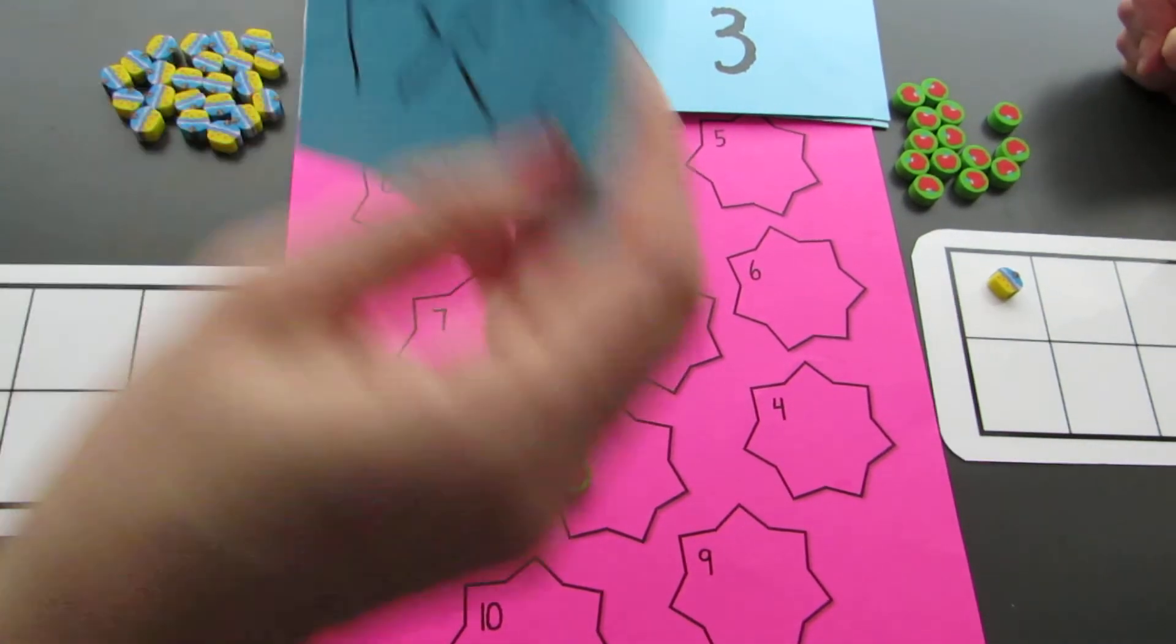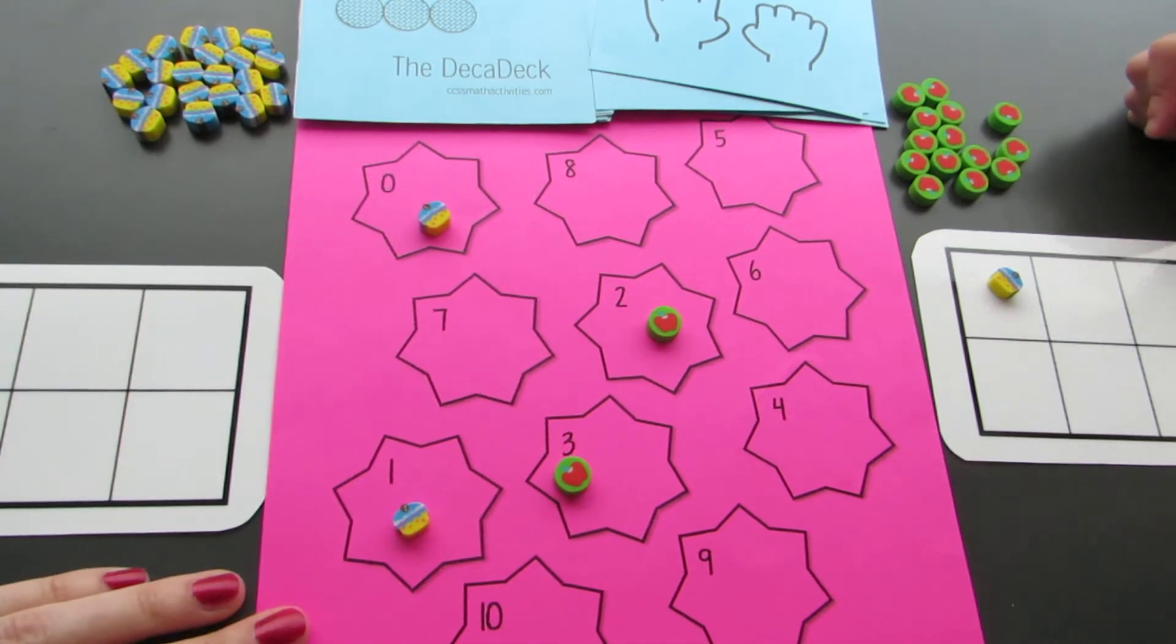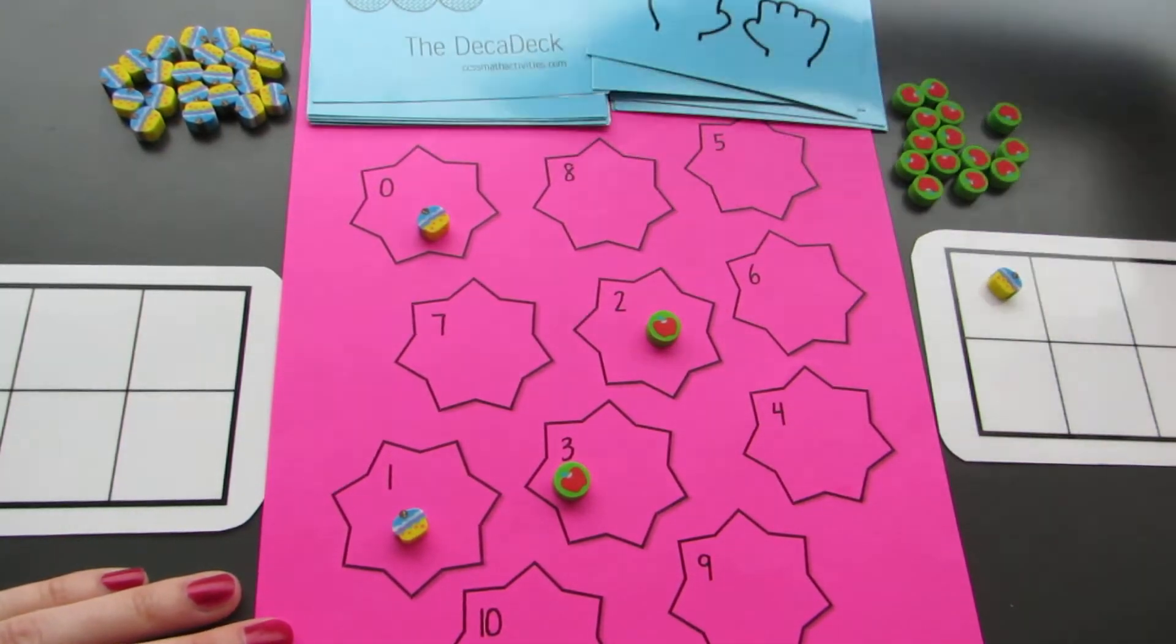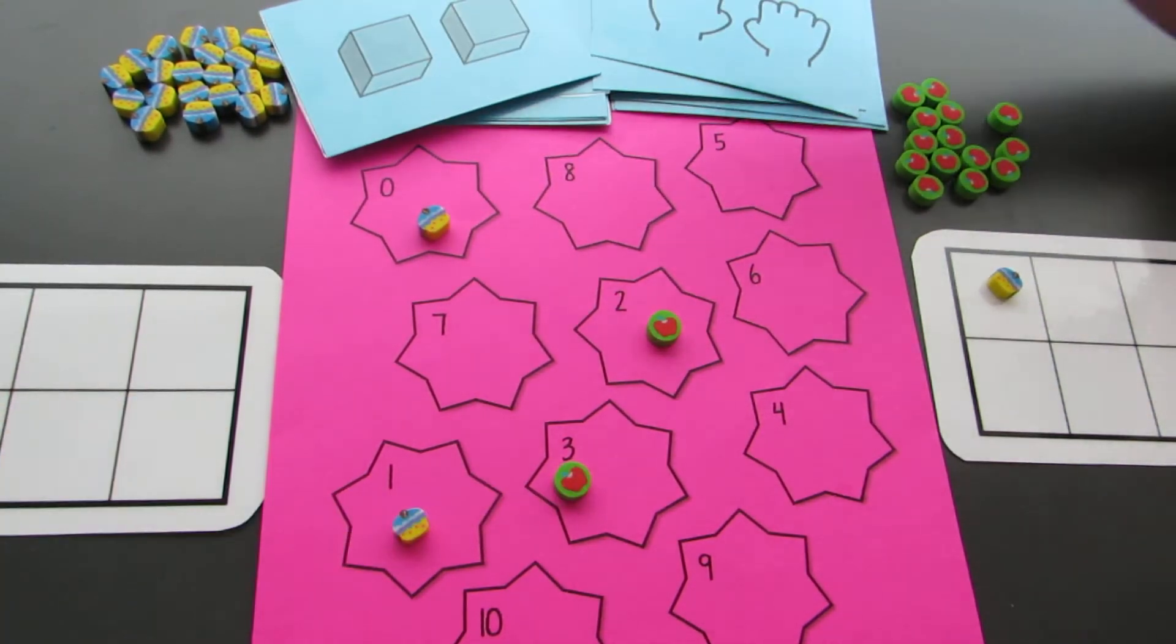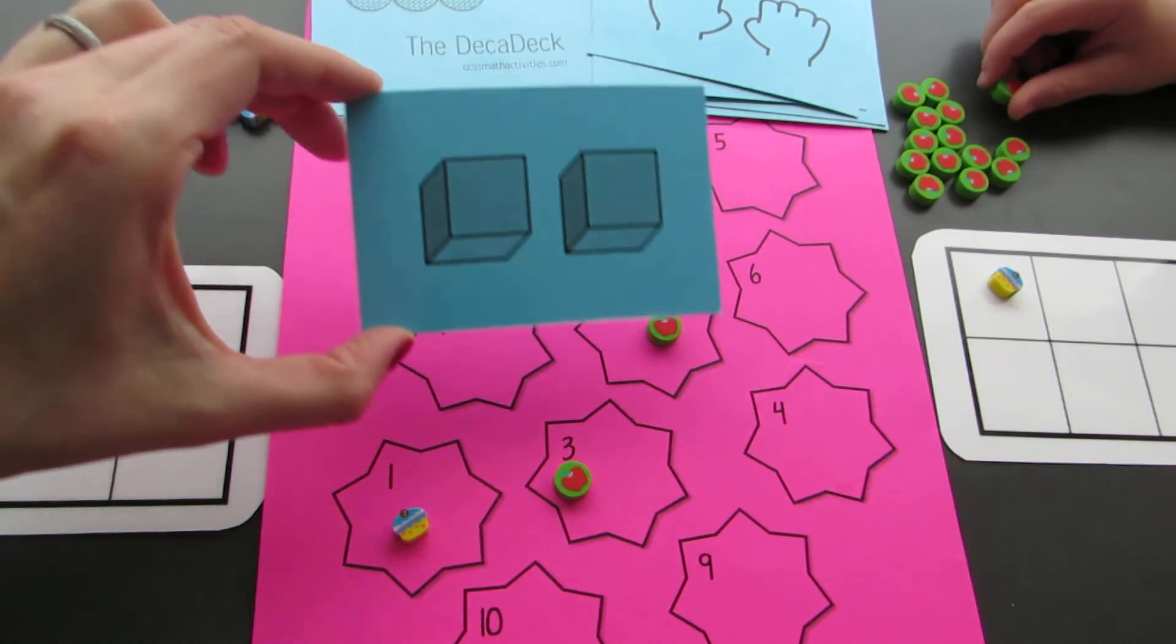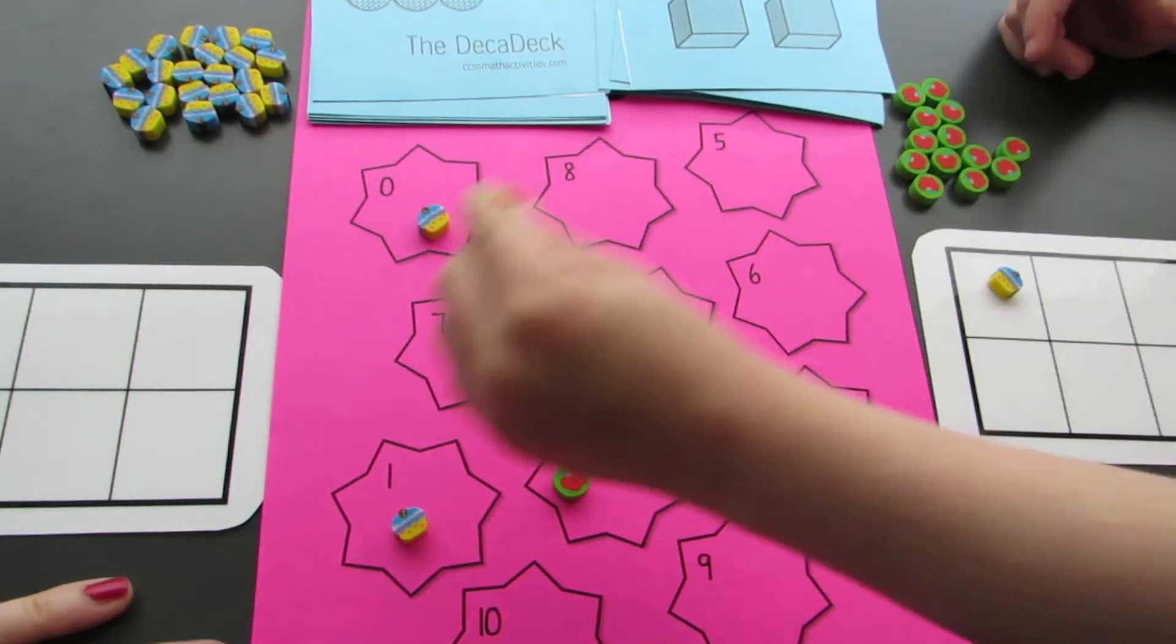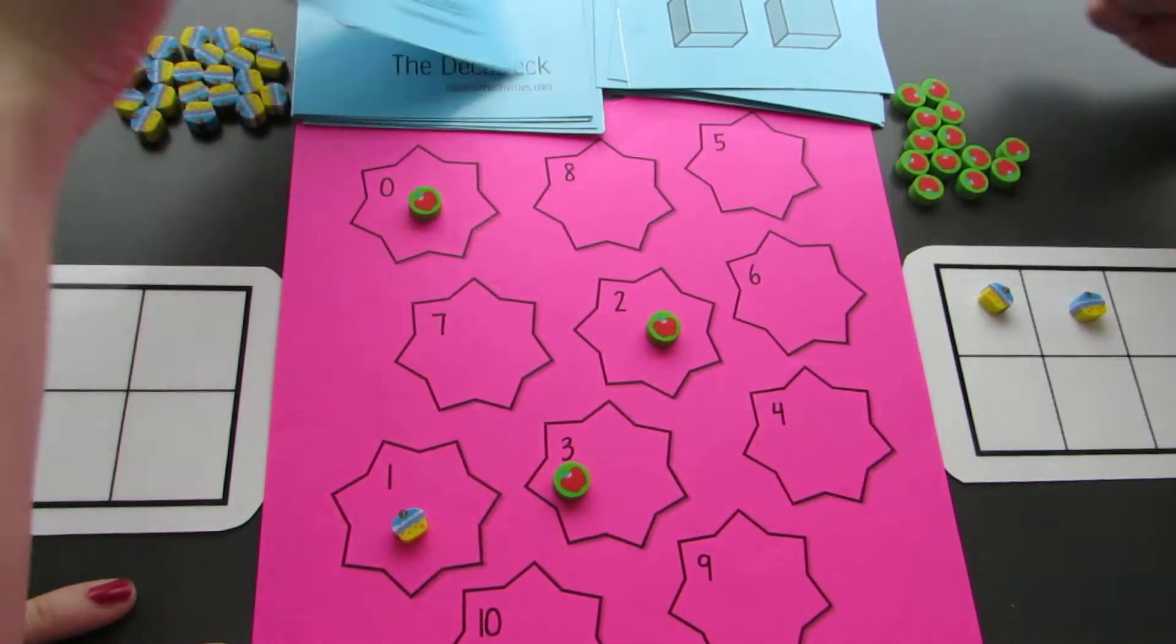Okay, my turn. Zero. No fingers are up. I got zero. Your turn. Here. Can you show us? Zero. You also got zero. Oh, you're gonna bump me again. Now you have two.